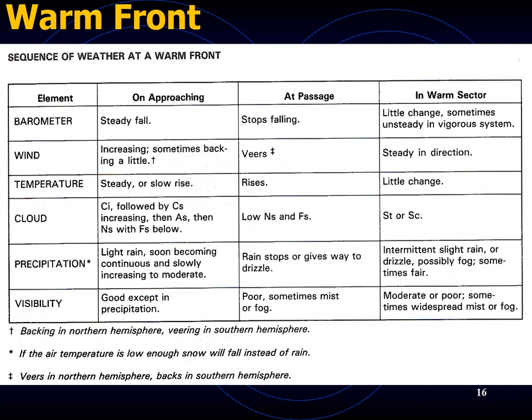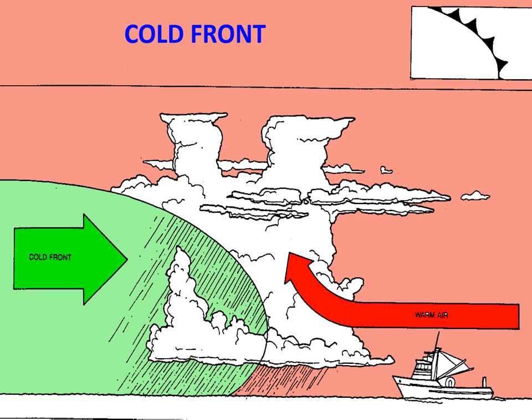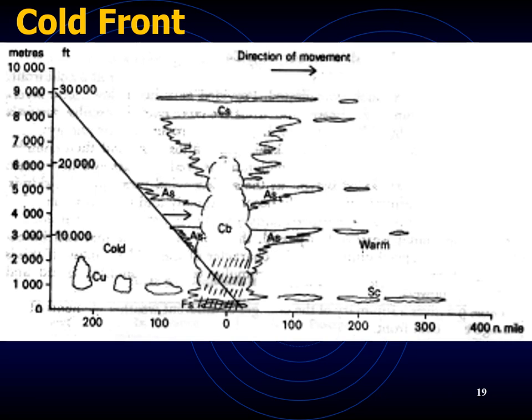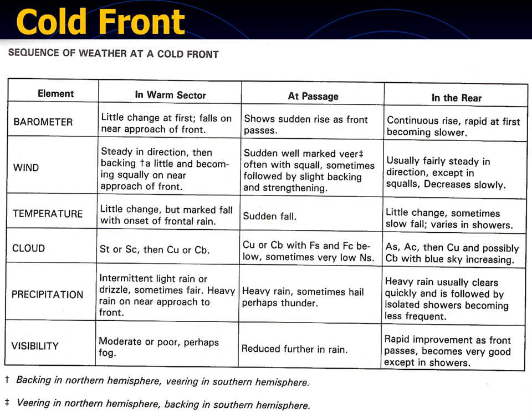Cold fronts generally slope comparatively steeply and produce active cloud and showery precipitation, sometimes including thunderstorms. Pressure starts to fall as you approach a cold front, with a sudden rise at the front and then a slow rise at the rear. The wind veers to the west or northwest in the northern hemisphere and backs to the west or southwest in the southern hemisphere, often squally. The temperature suddenly falls as the front passes. Cloud types begin with altocumulus or altostratus, then heavy cumulonimbus in advance and at passage, with the cloud base lifting rapidly after passage.